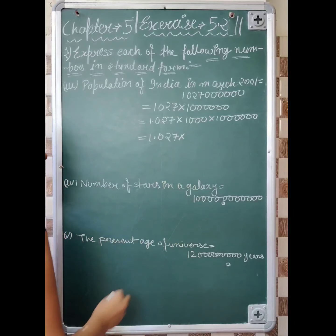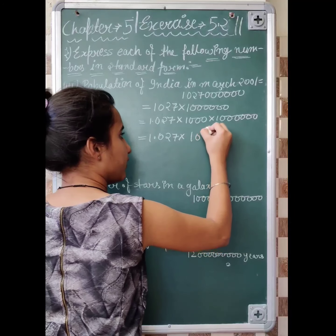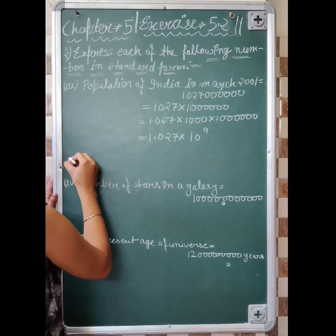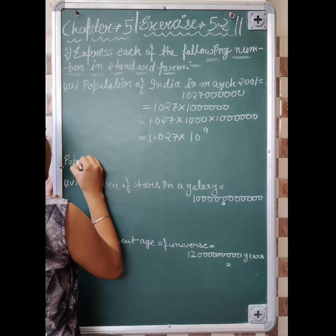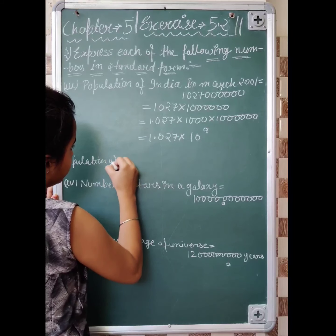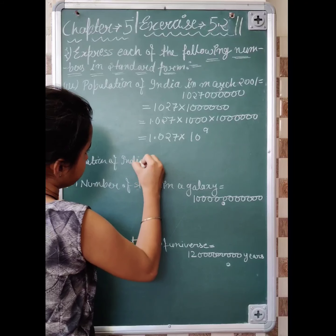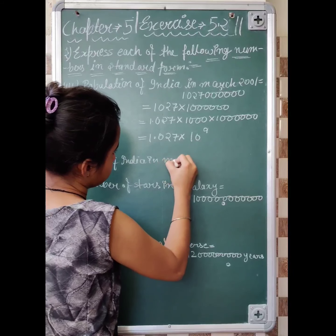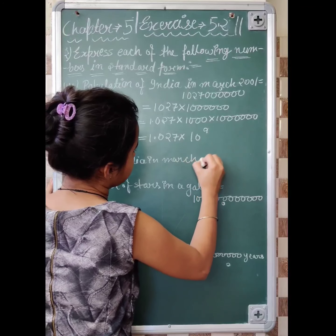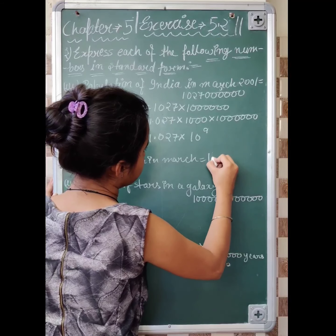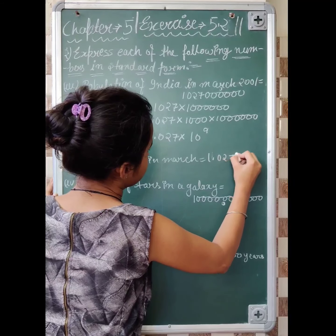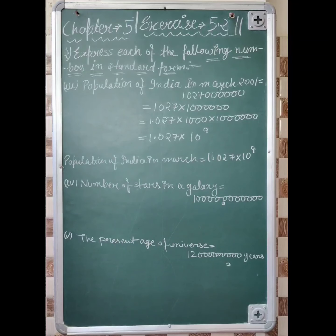1.027 into kitne zeros honge? 6, 7, 8, 9. It means 10 raised to the power 9. So what is the population of India in March? Is equal to 1.027 into 10 raised to the power 9.